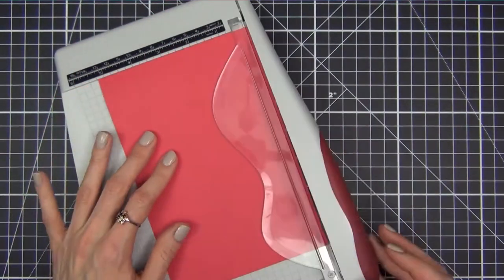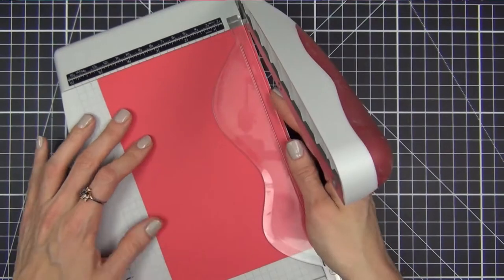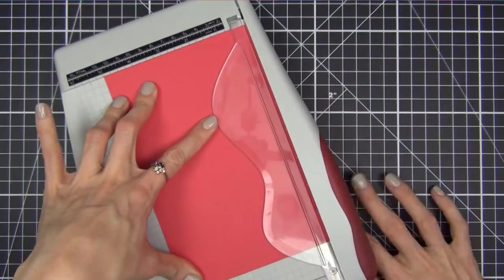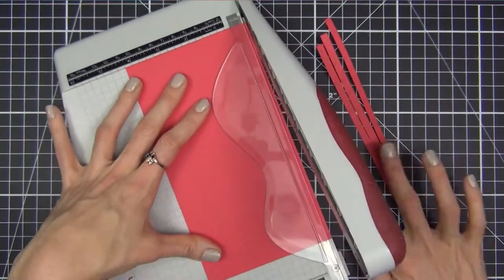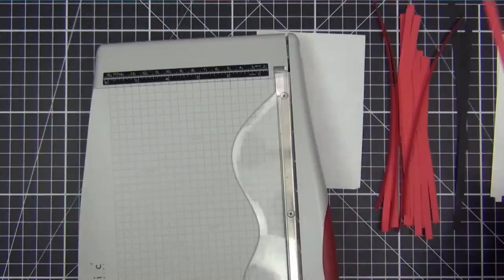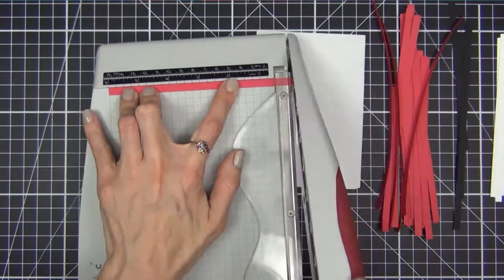Okay, so I'm starting out by slicing quarter inch strips from red, black, and white cardstock. Since I'll be cutting them into squares, I'm very mindful of my measurements. If you don't have a paper trimmer, you can always use a ruler and a craft knife.